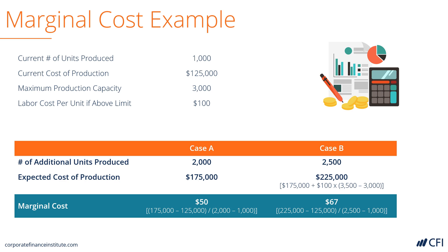So in case A the firm needs to sell the product for at least $50. In case B the firm needs to sell the product for at least $67. In both cases it would ideally be an even higher price than that.